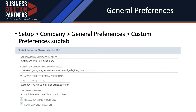I want to draw your attention to the advanced intercompany journals setting, which I made sure is enabled because we will be using this for intercompany distributions. What that means is that when the shared vendor bill is approved, there will be a generated advanced intercompany journal entry that actually performs the allocation.